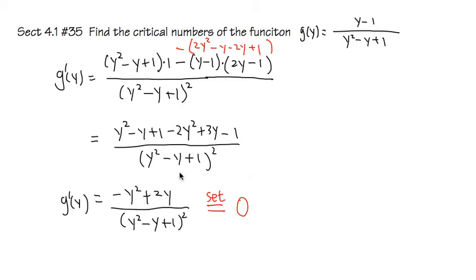So we must solve, I'll just put it right here, we must solve the numerator, which is -y²+2y=0. The denominator doesn't matter, and in fact the denominator will never be 0. You can check, so there's no worry. We just need to set the numerator equal to 0.